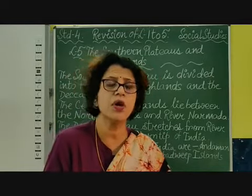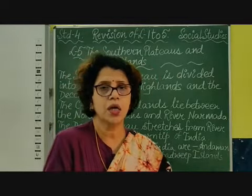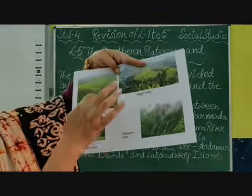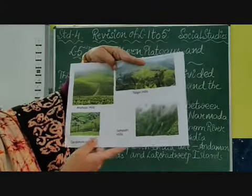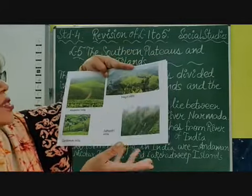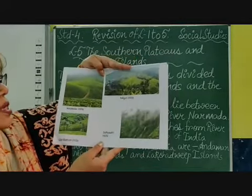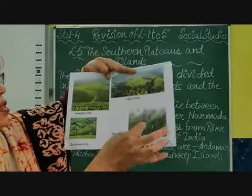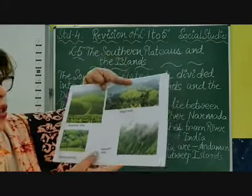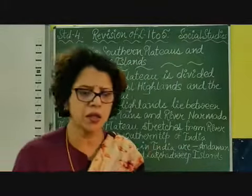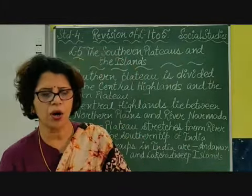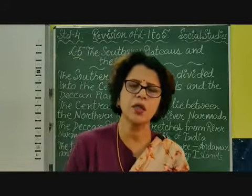Godavari is the longest river and it is called the southern Ganga because it is the longest river in the Deccan plateau. Here you can see Anaimudi, the highest peak in the southern plateau. This is Nilgiri hills where the western ghats and the eastern ghats meet. These also include the Sahyadri range and the Cardamom hills. All these are in the southern plateau.